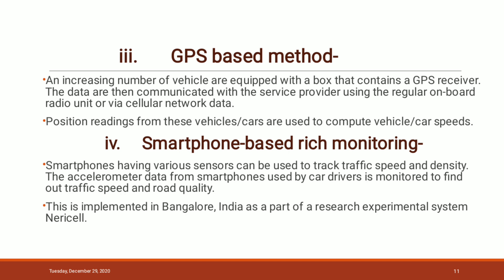The next method is the smartphone-based rich monitoring system. Smartphones have various sensors that can be used to track traffic speed and density. The accelerometer data from the smartphone used by a car driver is monitored to find out the traffic speed and quality of the road. This system is implemented in Bangalore, India as part of a research experimental system.